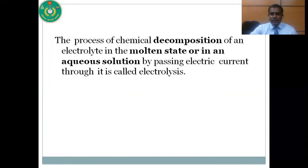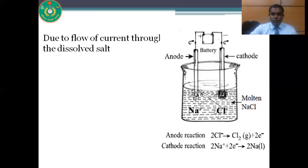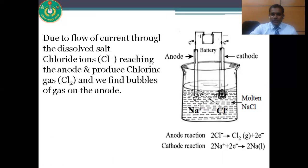The process of chemical decomposition of an electrolyte in its molten state or in solution by passing electric current through it is called electrolysis. For example, when sodium chloride is melted or dissolved in solution, it produces sodium ions and chloride ions. Due to the flow of external current through the dissolved salt, chloride ions — being negatively charged — migrate to the anode, donate electrons, and produce chlorine gas. We find bubbles of chlorine gas at the anode.